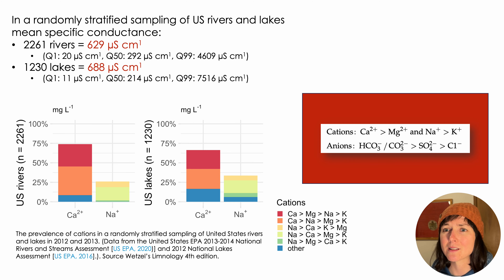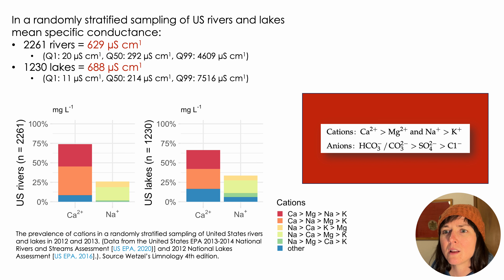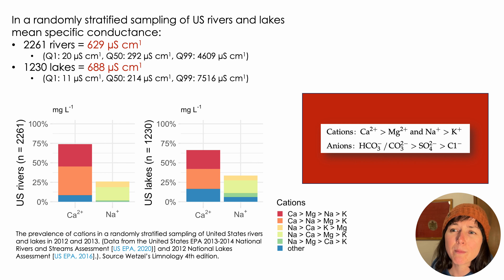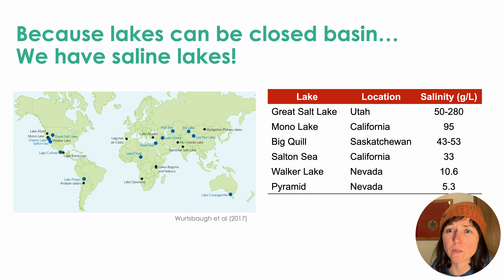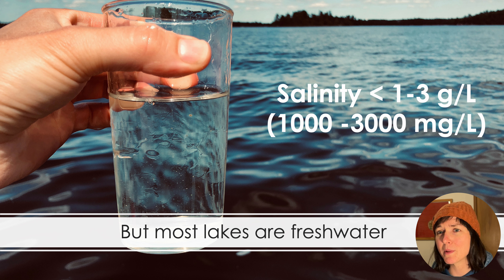A similar database does not exist for global lakes, but in a randomly stratified sampling of U.S. rivers and lakes by the United States EPA, mean specific conductance in over 2,200 rivers was 629 microsiemens per centimeter, and in 1,230 lakes it was 688 microsiemens per centimeter. And over large regions of the temperate zone, the dissolved composition of rivers and lakes is dominated by bicarbonate and calcium, followed by sulfate and magnesium and sodium. Unlike rivers, lakes can also be saline and hypersaline. These are mostly lakes that are closed basin where water can't flow out. But again, most of the millions of lakes on Earth are freshwater.